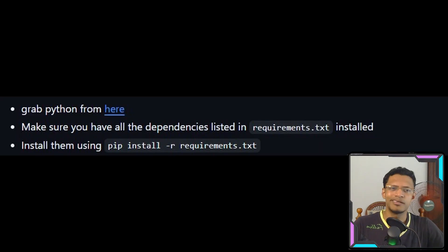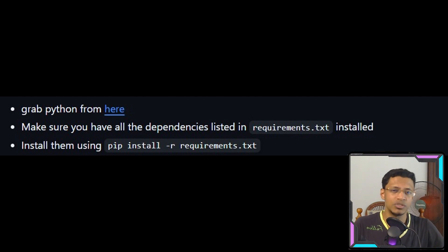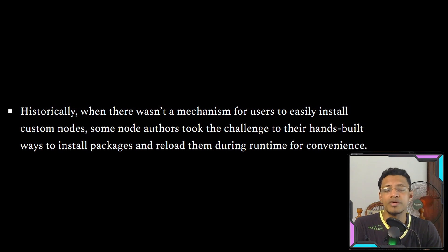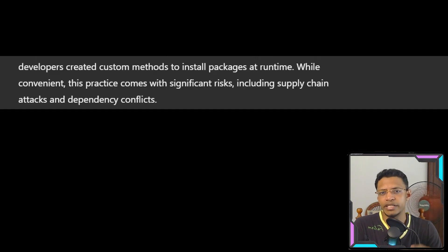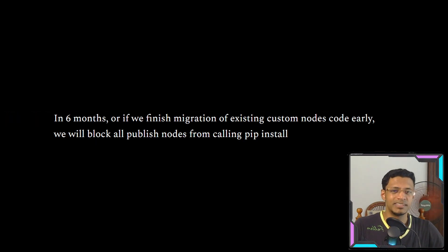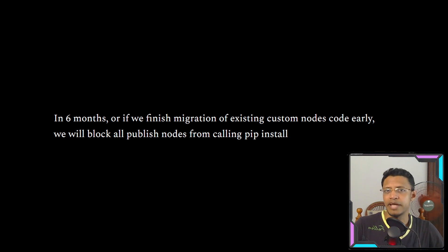The second preventive measure they mentioned is about pip installation. Whenever you install a new custom node, it tells you to go into that custom node folder and type in 'pip install -r requirements.txt', or it's done automatically by running a batch file. They mentioned that while convenient, this practice comes with significant risks including supply chain attacks and dependency conflicts. To address this, incremental additions of pip installs will be blocked immediately, and within six months all nodes using runtime package installation will be banned.